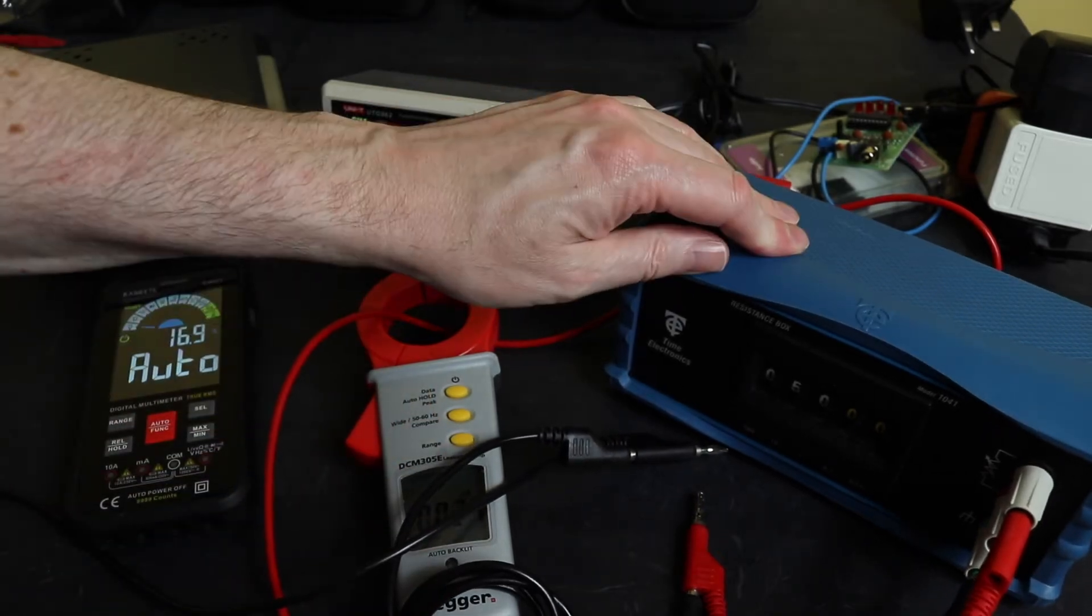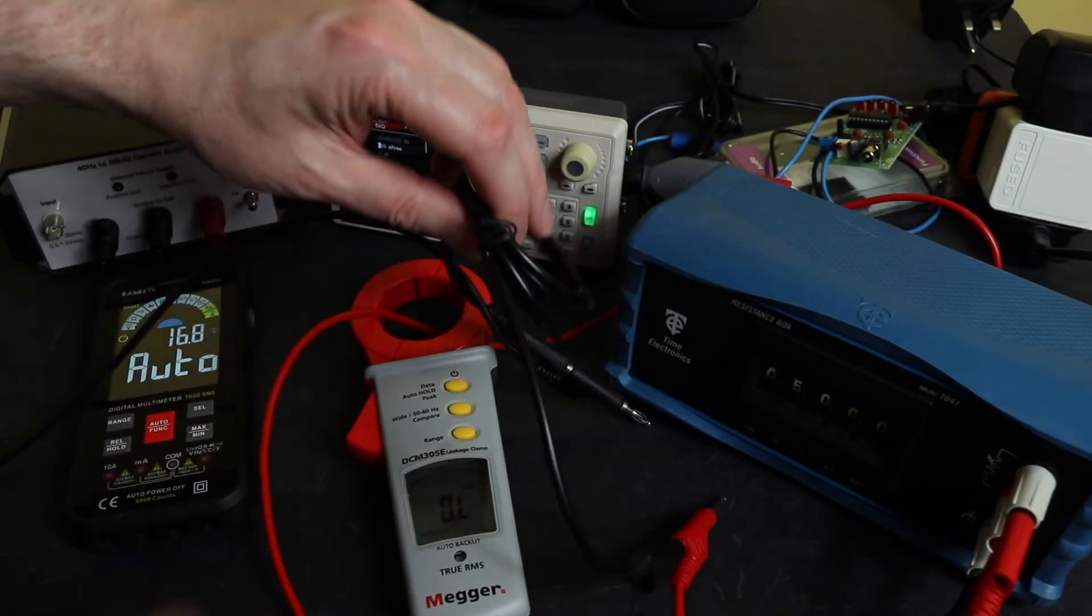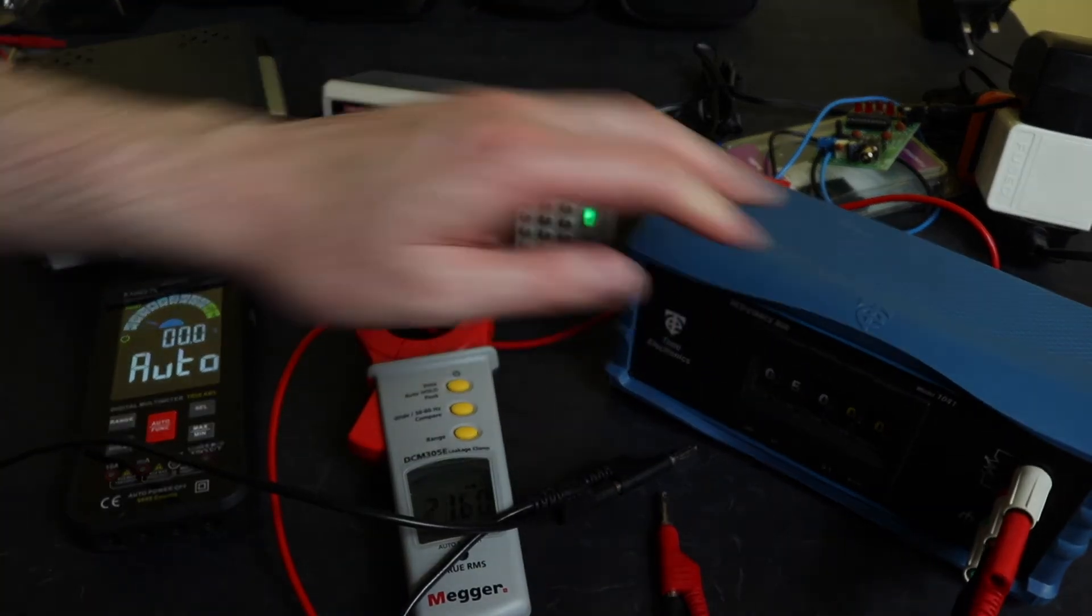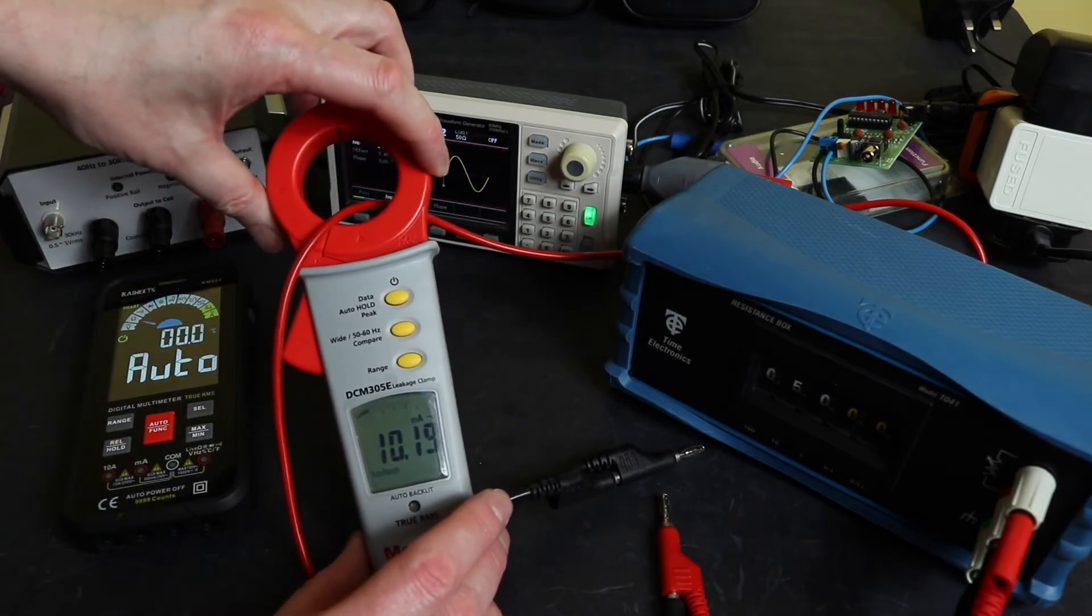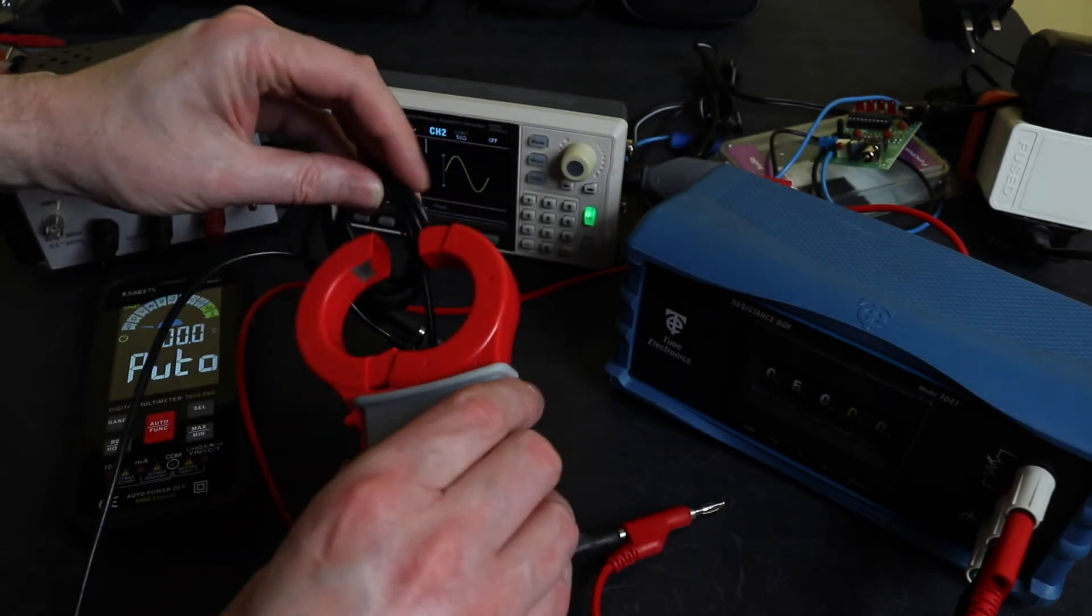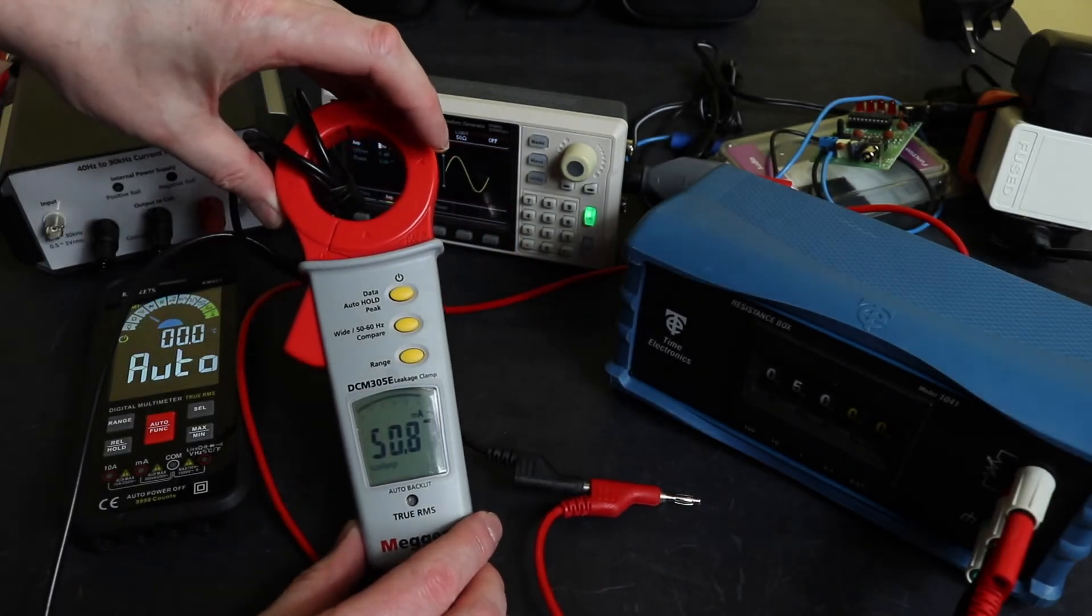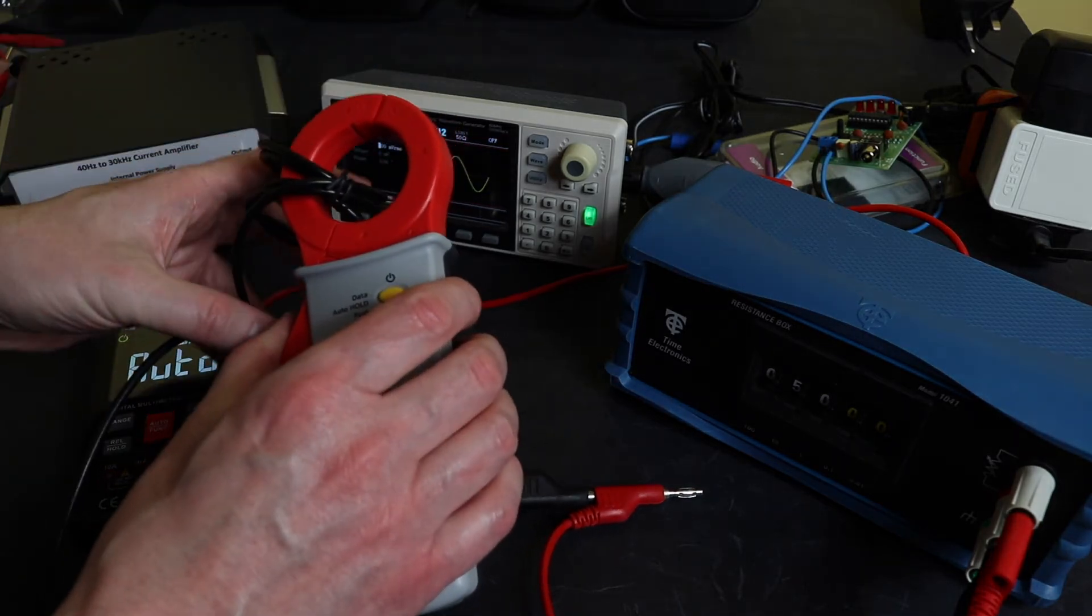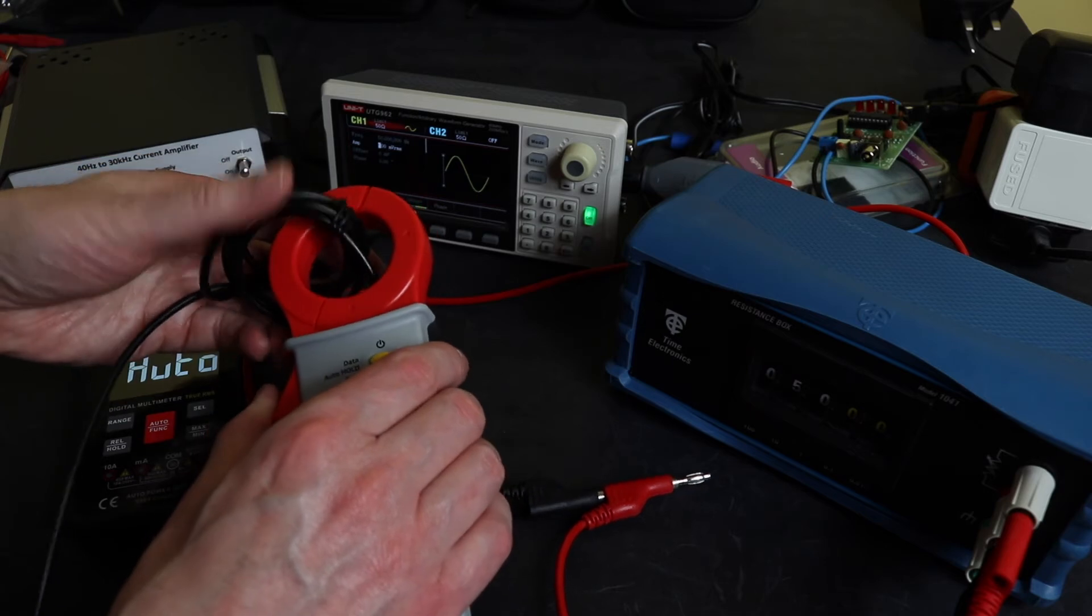There's the reading that I've got there, 10.19 milliamps with a single loop. Take him out, put him through the five wires, we should be expecting somewhere around about 50 milliamps and you can see there I've got 50.87. So that's the easiest way to get the output and you can put pretty much whatever number of turns you like in there.